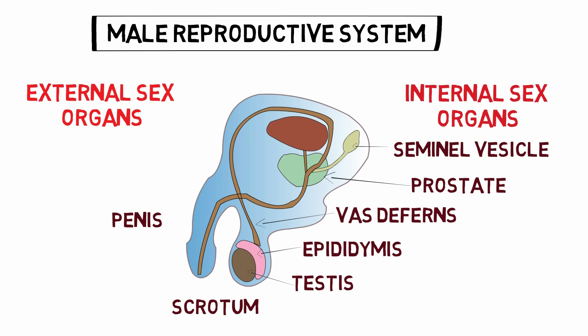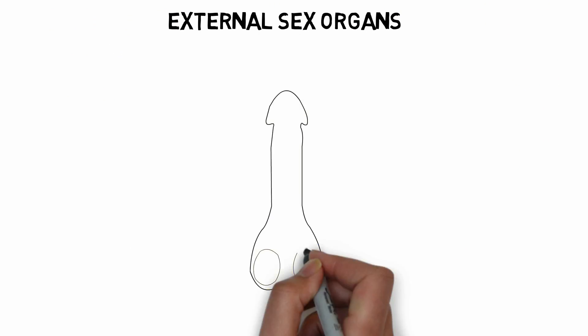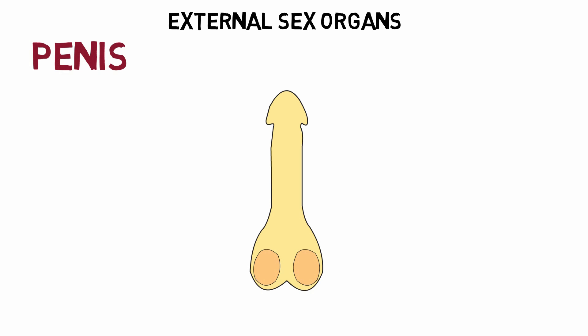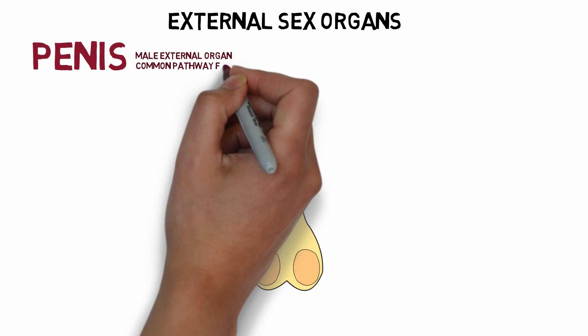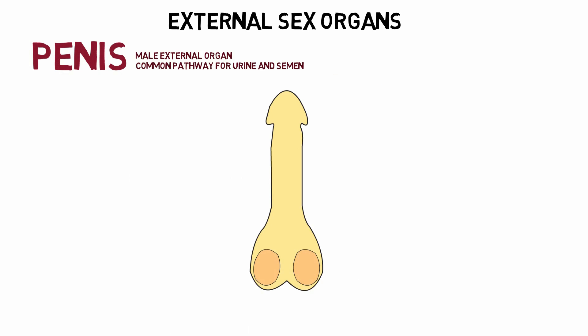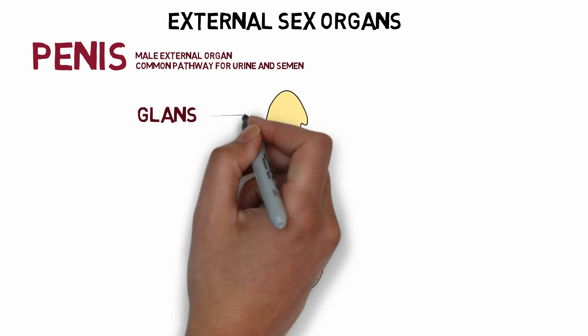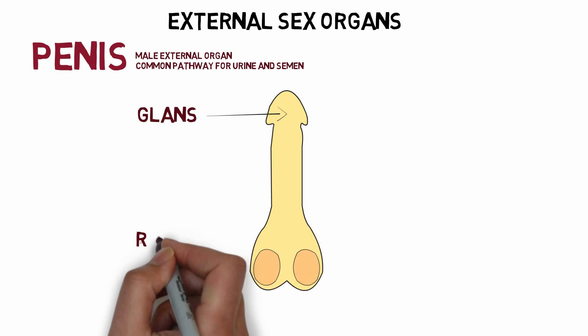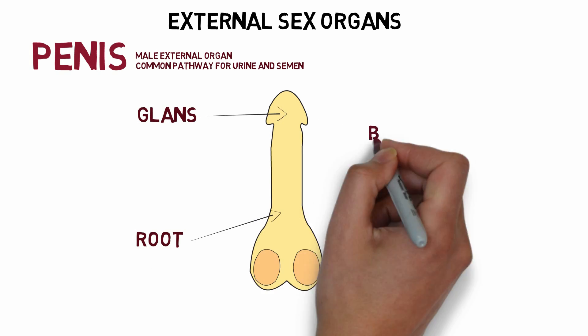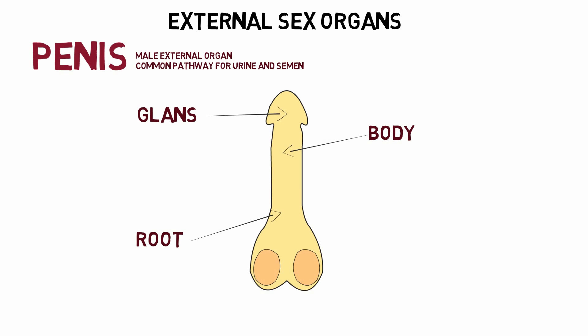First let's talk about the external sex organs. The penis is the male external organ that serves as a common pathway for urine and semen. The penis is made up of the glans, root, and the body. The root of the penis is the part which attaches the penis to the body, and it lies in the superior perineal pouch.